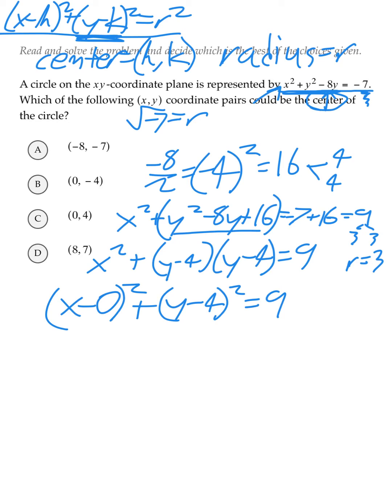Now that the equation is in standard form, we know what the value of h is, and we know what the value of k is. The value of h would be 0, and the value of k would be 4. So, the center of the circle would be h comma k, or 0 comma 4, which is also answer C. So, let's bubble that in as our answer.